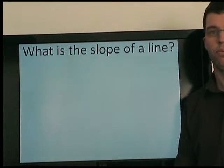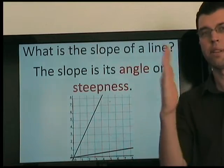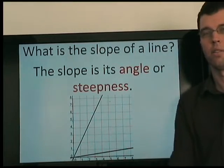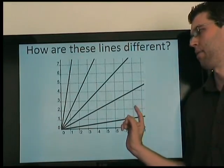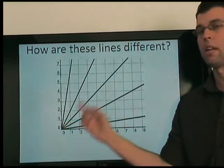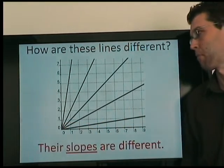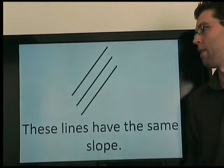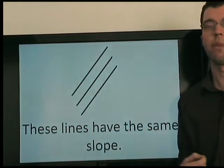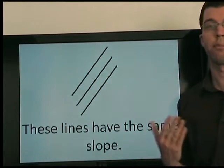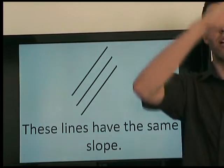What is slope? Very simply, it's the angle or steepness of a line. Now how are these lines different? It's not where they start, it's their steepness, which we call slope. If lines have the same steepness, then we say they have the same slope. It doesn't matter how high up they are.